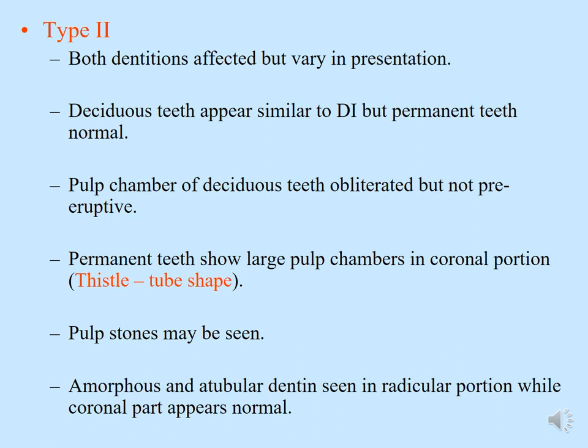Type two dentine dysplasia also affects both dentitions but varies in expression. Deciduous teeth appear similar to dentinogenesis imperfecta, but permanent teeth are normal. Pulp chambers of deciduous teeth are obliterated but not pre-eruptively. Permanent teeth show large pulp chambers in the coronal portion described as thistle-tube shape. Pulp stones or bulk calcifications may be seen, and amorphous atubular dentine is seen in the radicular portion while the coronal part appears normal. Type two is called coronal dentinal dysplasia.